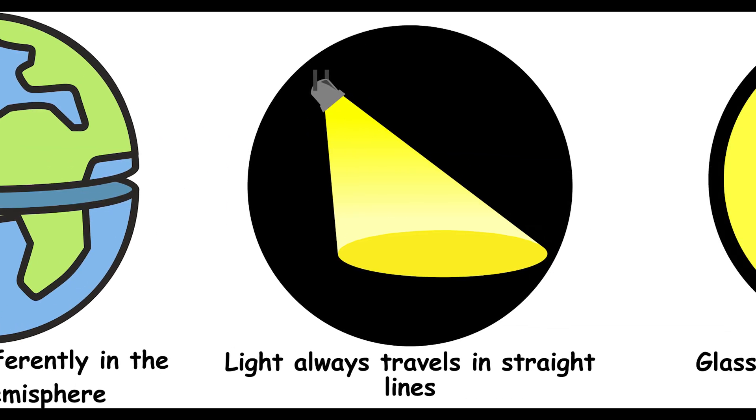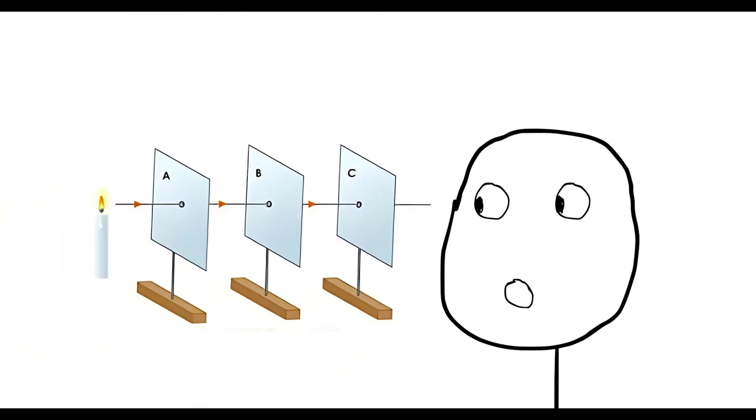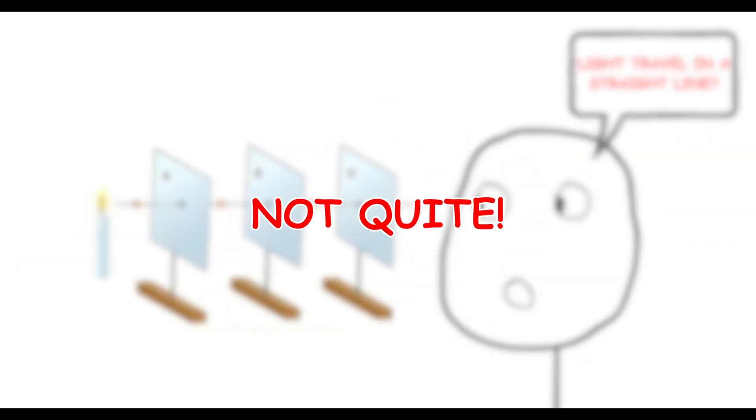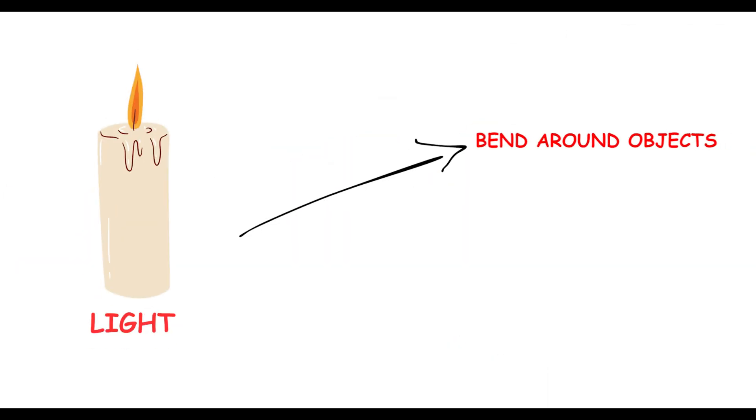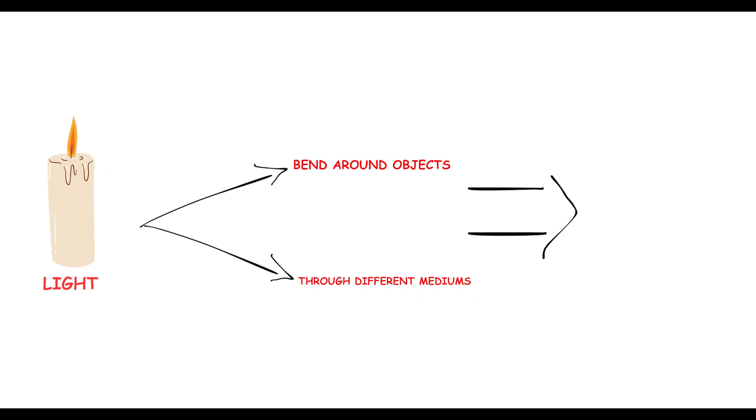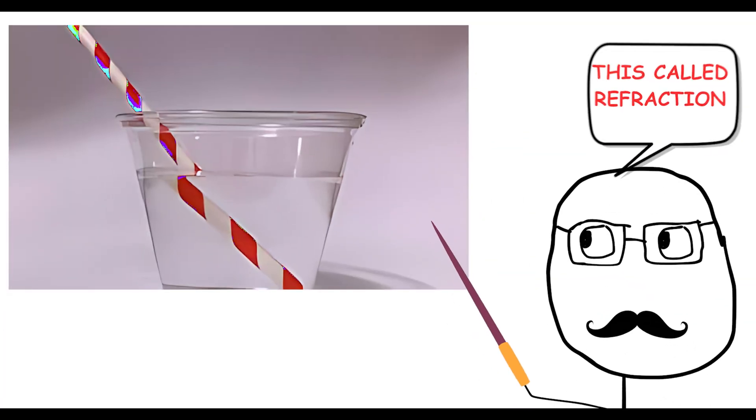Light always travels in straight lines. Think light always travels in straight lines? Not quite. Light can bend around objects and through different mediums, a phenomenon known as refraction. This is why a straw looks bent in a glass of water. So, light can take some surprising turns on its journey.